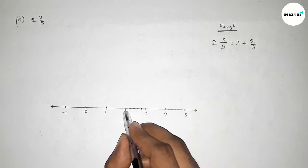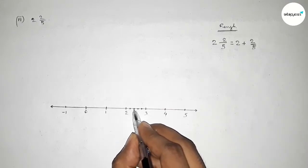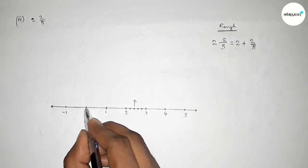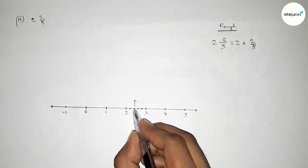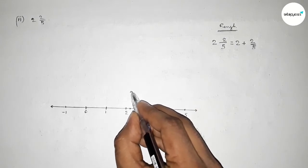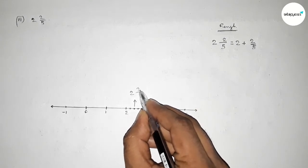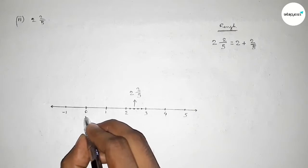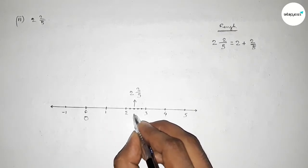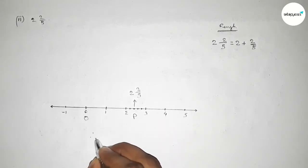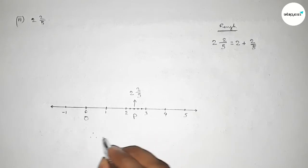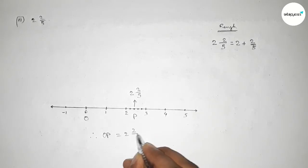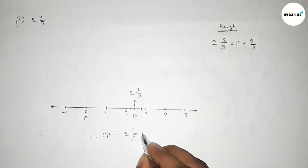Counting the fraction two over five: this is one over five, this is two over five on the number line. From this point to this point, this is total two and two over five on the number line. Taking point O and point P, therefore the length OP equals two and two over five units.